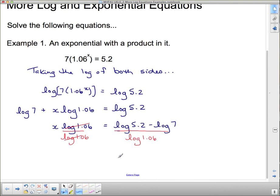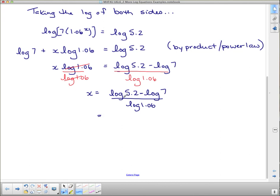I'm going to add just a couple of things in here before we finish it off, saying that I went from this line to this line by both product and power law. And down here, my answer is actually just going to be log 5.2 minus log 7 over log of 1.06. This is an exact answer. The approximate answer, if I type that into the calculator, I actually get negative 5.1.